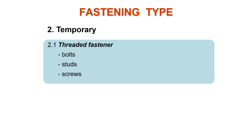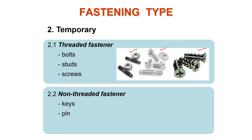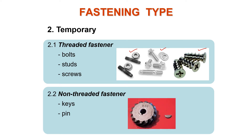Temporary fastenings include three types: bolts, studs, and screws. In non-threaded temporary fasteners, keys and pins are used to lock a gear onto a shaft. With these temporary fasteners, the gear assembled on a shaft can be disassembled without damage.